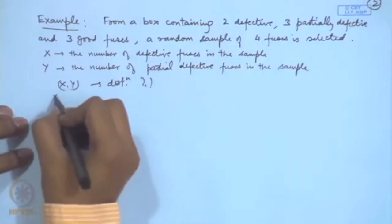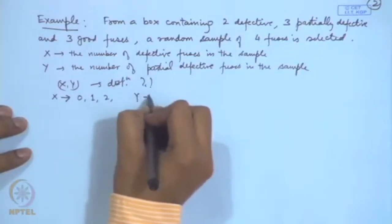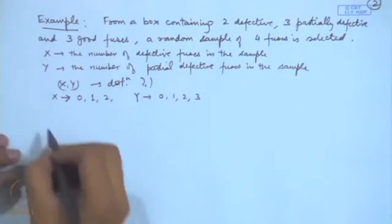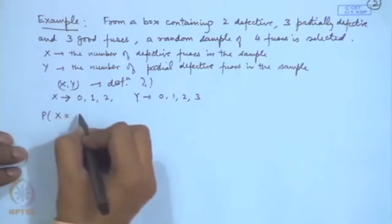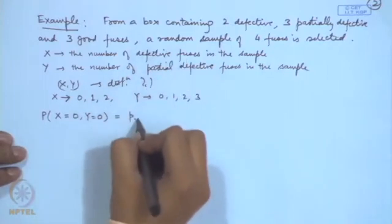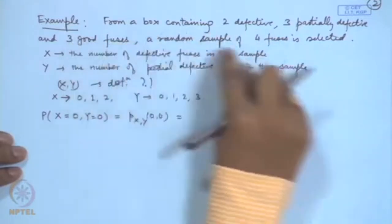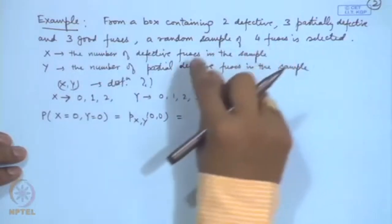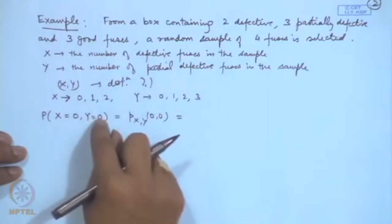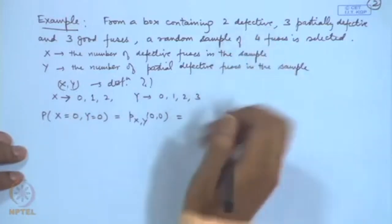First, what are the possible values X and Y can take? Since there are at most two defectives, X can take values 0, 1, and 2, and Y can take values 0, 1, 2, and 3. Consider P(X=0, Y=0): since the maximum number of good fuses is 3 and we are selecting 4, at least one must be defective or partially defective, so this probability is 0.